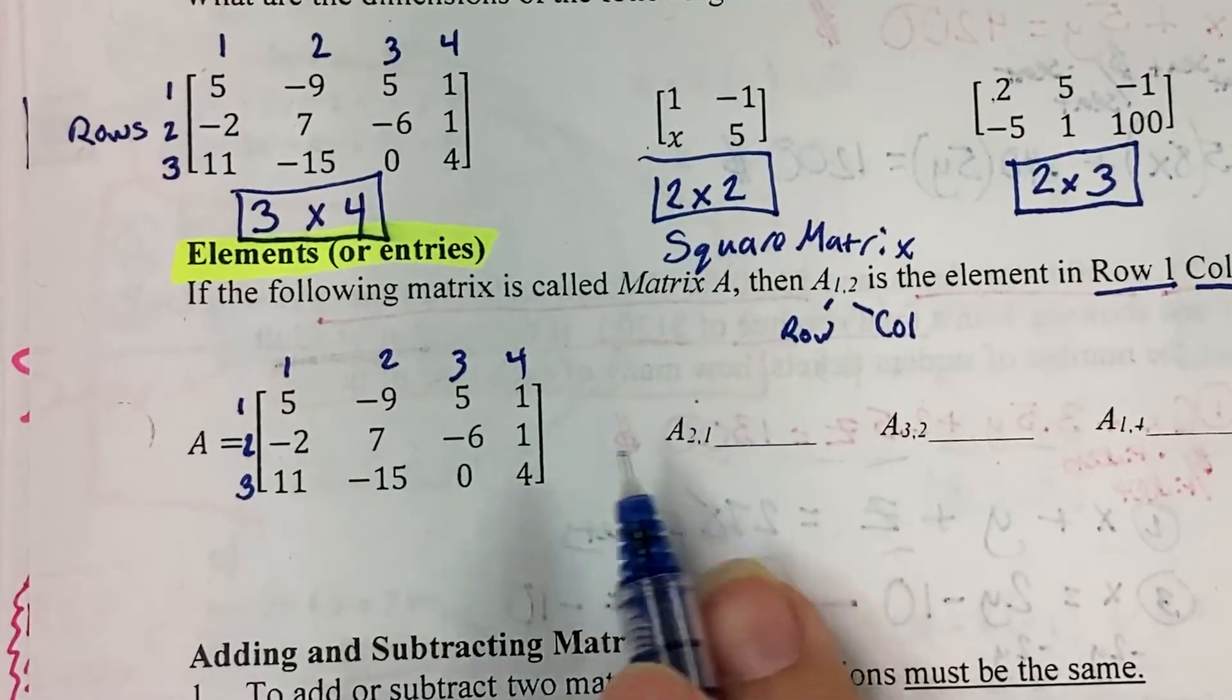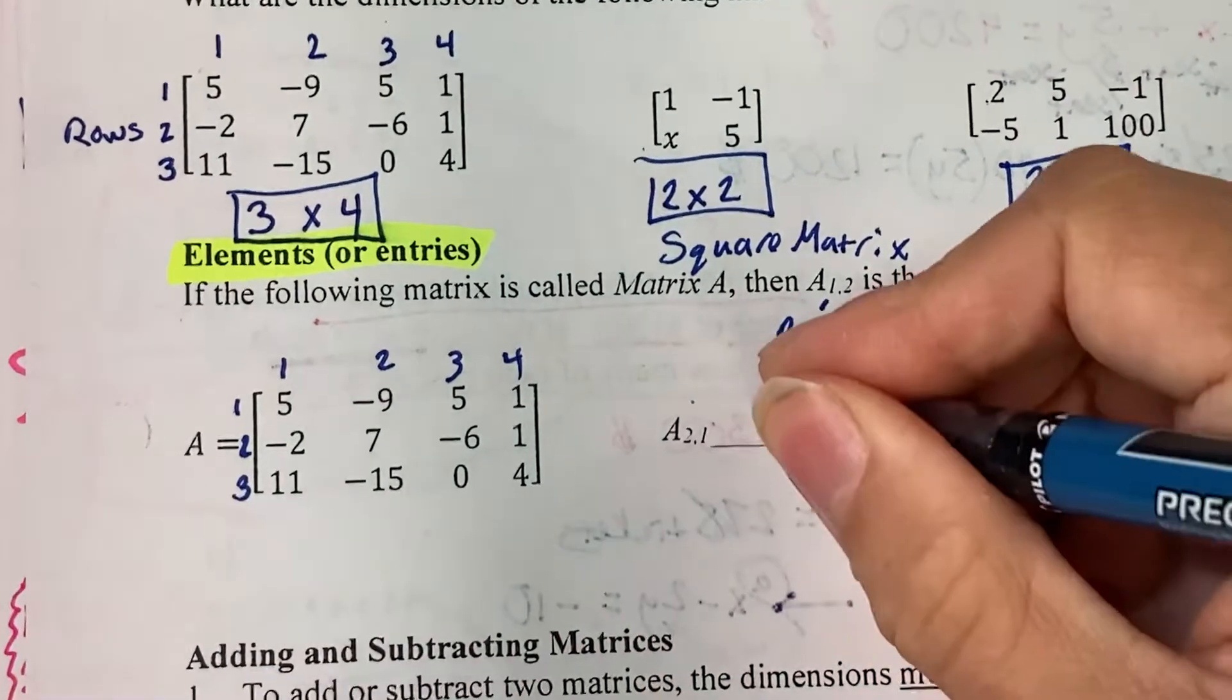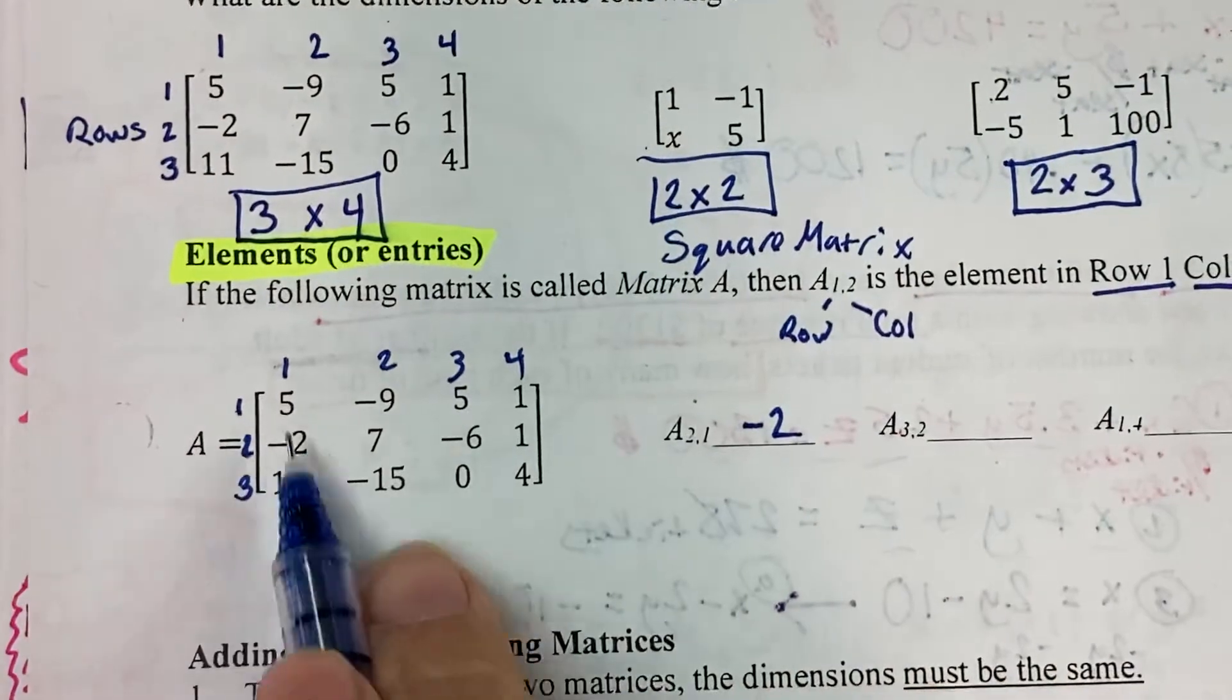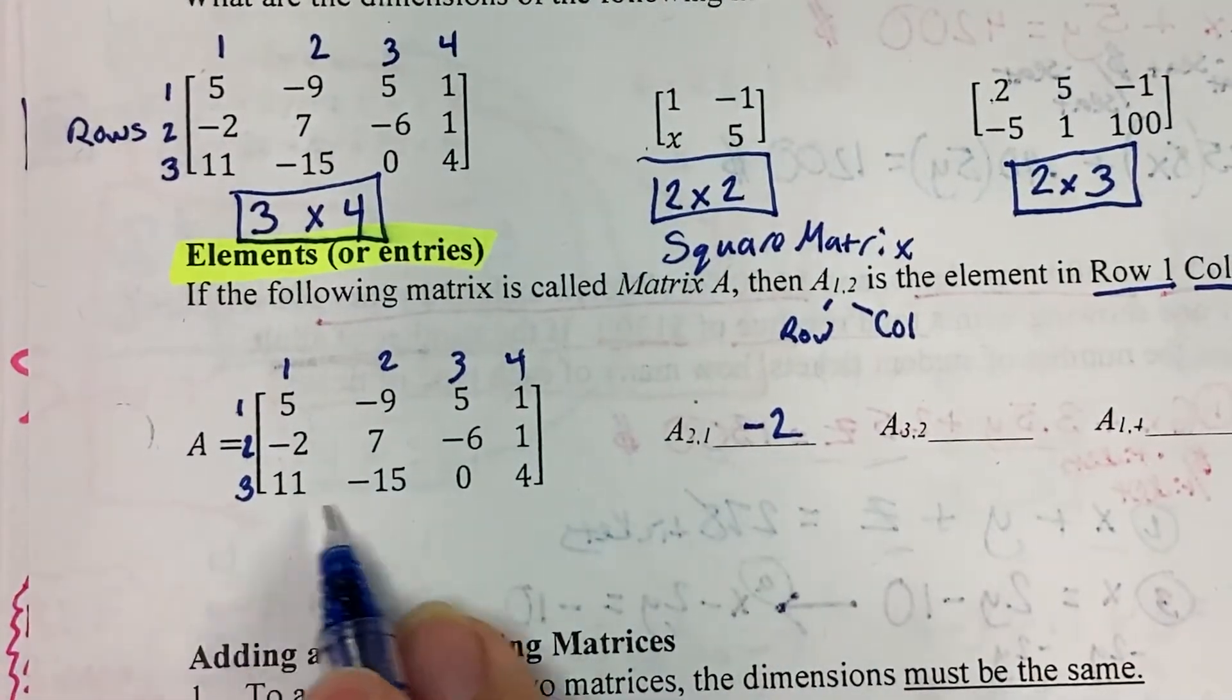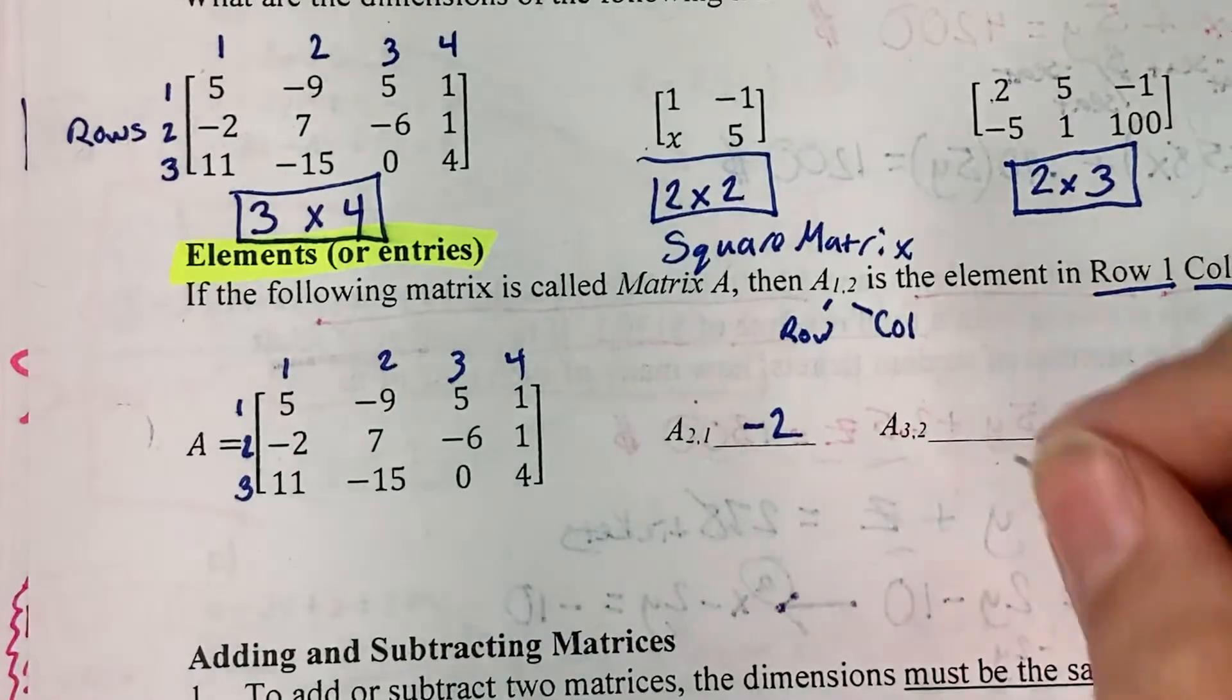So then element 2,1, that would be negative 2, second row, first column. This would be third row, second column, or negative 15.